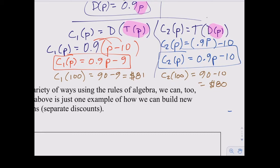This plants the seed for composite functions. Is composition of functions a commutative process? We know addition is commutative, multiplication is commutative - but is composition? No. D(T(p)) does not equal T(D(p)). Composition in general is not commutative, so the order matters when taking composite functions.